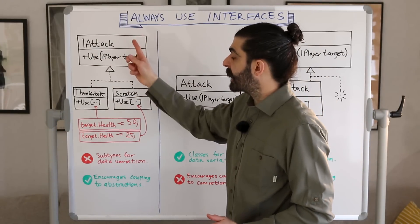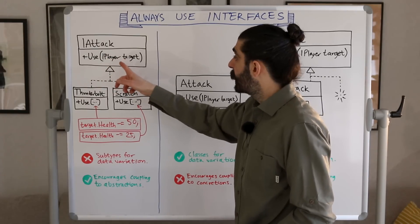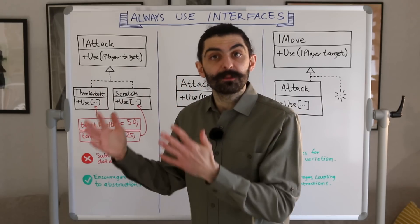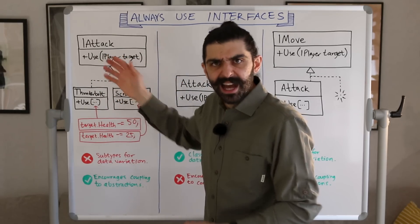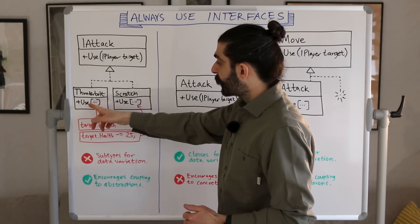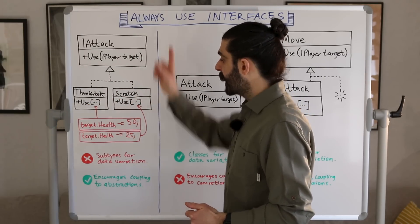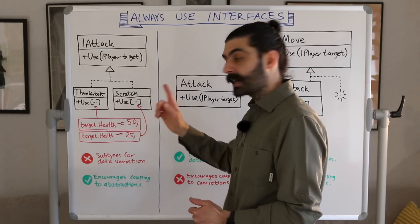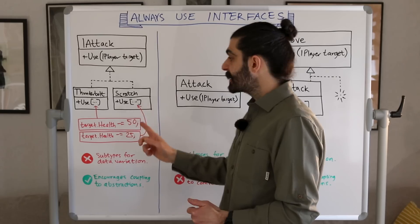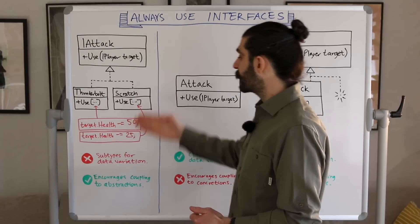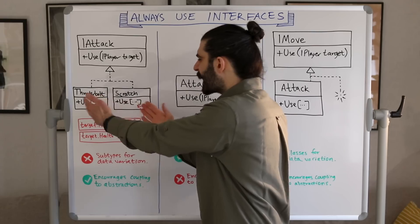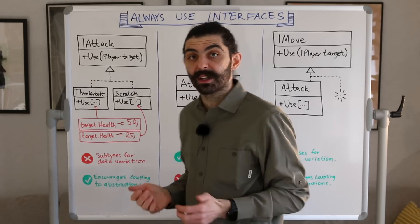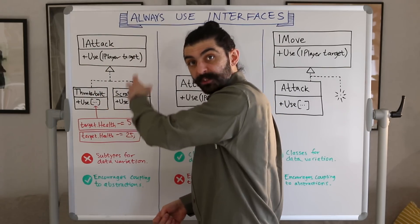One of the examples we looked at was this: you have an interface called iAttack with a method called 'use' that takes an argument of type iPlayer called the target. This is part of a turn-based game where players use different attacks to fight each other. There are two subtypes — Thunderbolt and Scratch — which implement the interface. However, the only difference between these two subtypes is that 'use' reduces the target's health by 50 or by 25. So the only variation is in data; there is no behavioral or algorithmic variation. This is not a sensible use of subtypes.